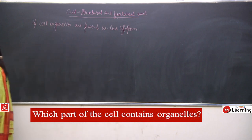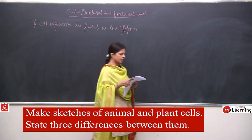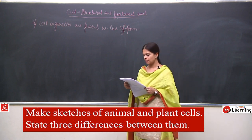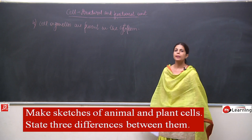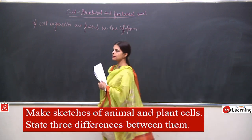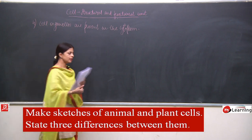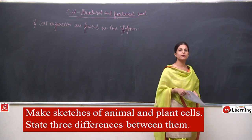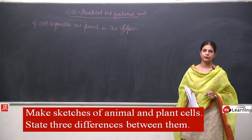That was a very small answer question. Now we will talk about question number 5, which says to make sketches of animal and plant cells and state three differences between them. But we have already discussed this in the beginning of the chapter, so we very well know the structure of the plant and animal cell along with the differences.